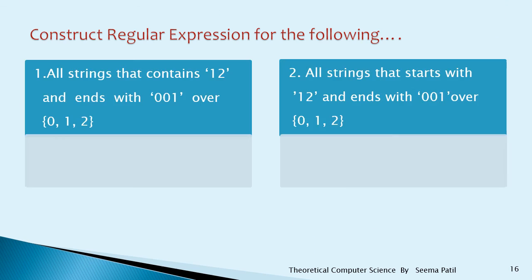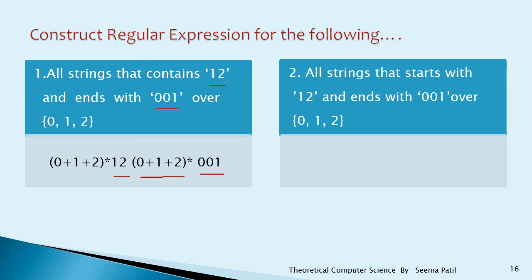All strings that contain 12 and end with 001 over {0, 1, 2}: before 12 there can be any number of 0, 1, 2 — write (0 + 1 + 2)*. Then 12, then between 12 and 001 there can be any number of 0, 1, 2 — write (0 + 1 + 2)*. Then end with 001. The regular expression is (0 + 1 + 2)*12(0 + 1 + 2)*001.